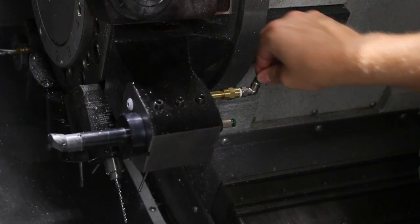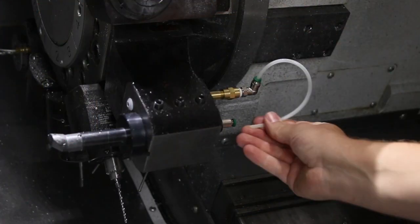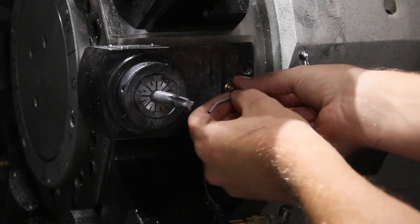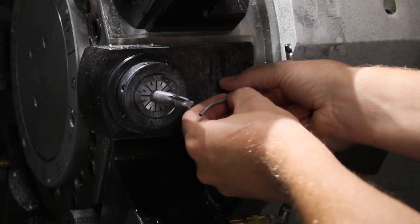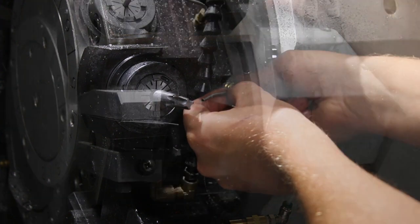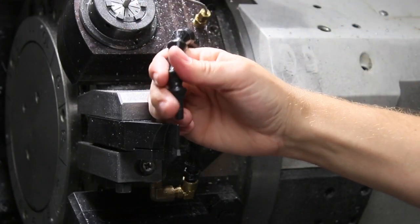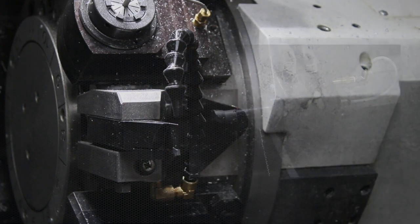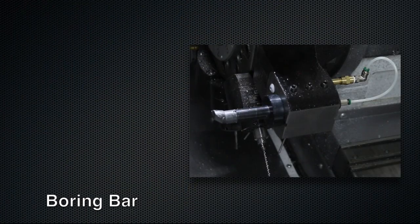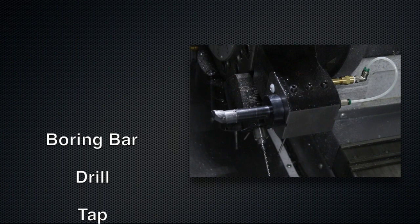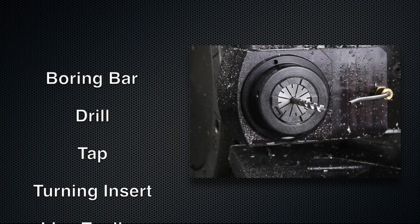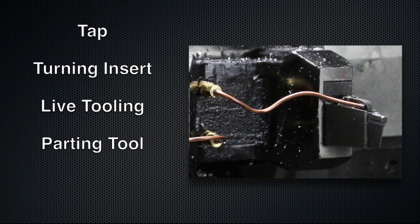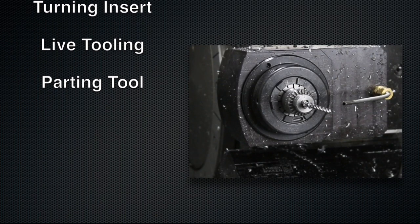Finally, install nozzles on each turret tool station. With a variety of tools that can be installed on a modern CNC lathe, some creativity will be required to get the best setup possible. Here are some examples of nozzles installed on a variety of lathe tools, such as a boring bar, drill, tap, turning insert, live tooling, and parting tool.